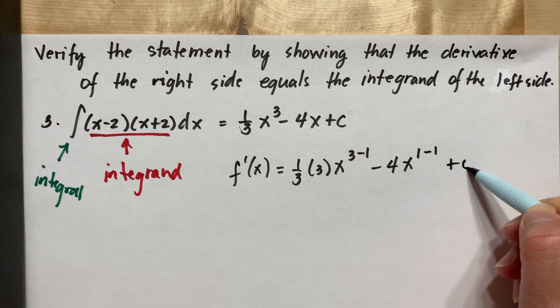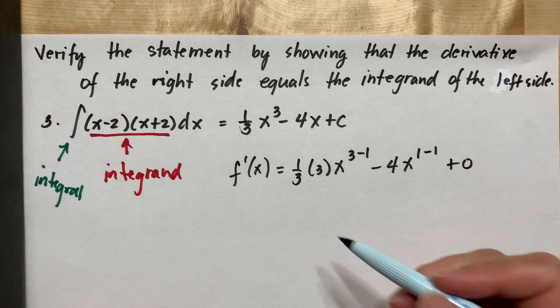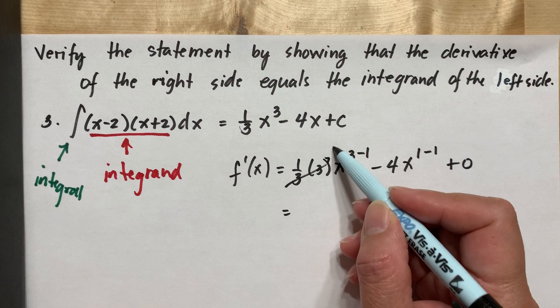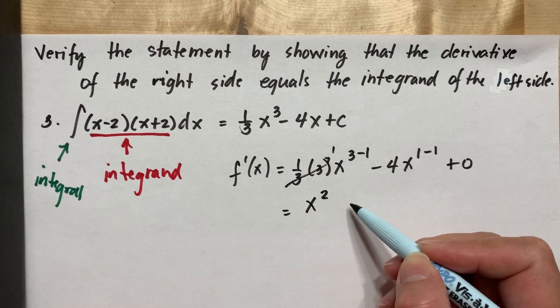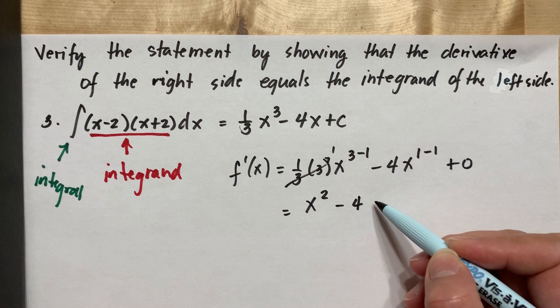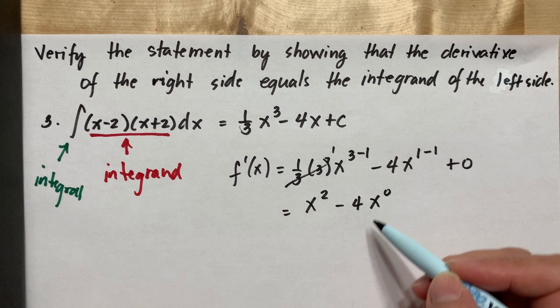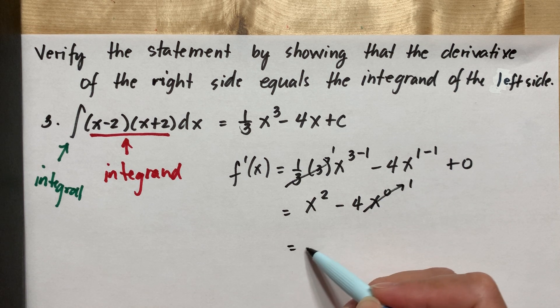And the derivative of constant is always zero. So three over three will be equal to one. So this will be x squared minus 4x to the zero. Then anything raised to zero is one, so this will be x squared minus 4.